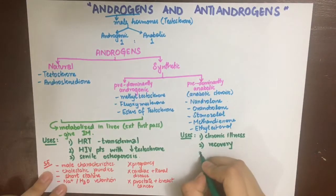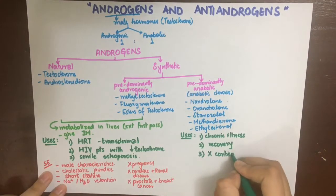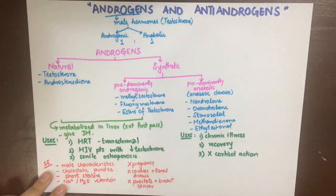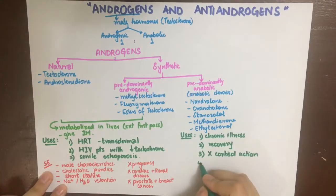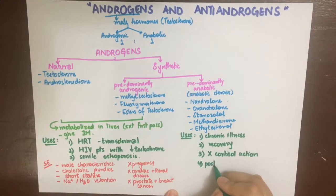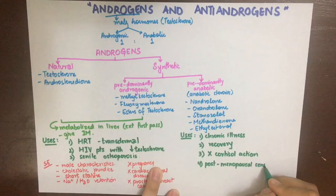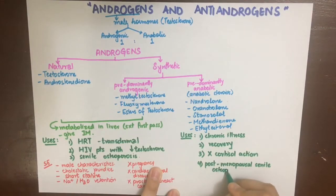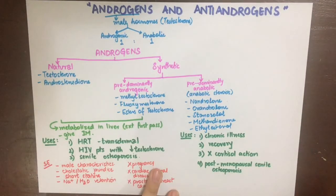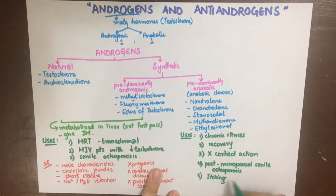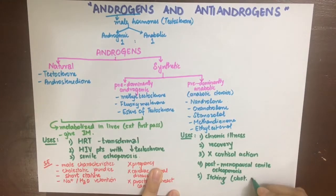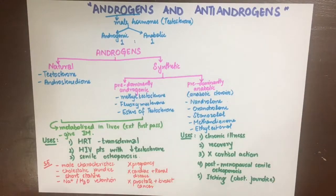Anabolic steroids are also used to counteract the action of cortisol — cortisol decreases lean body mass and increases energy expenditure, and testosterone reverses that. They can also be used in postmenopausal and senile osteoporosis, and are also used to treat itching associated with biliary obstruction, where the itching is due to bile salt deposition under the skin.